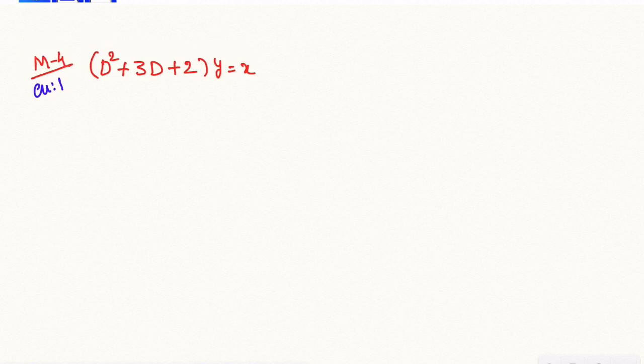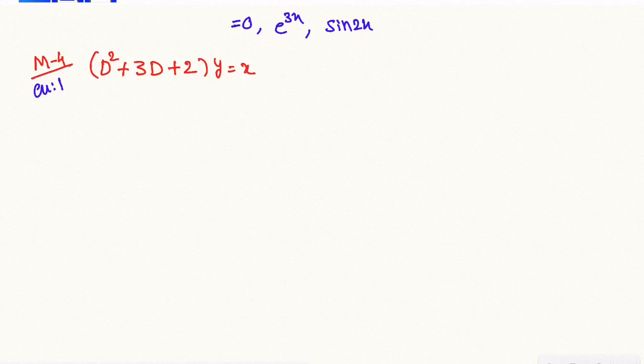We will show the first model with e^(2x) and e^(3x). We will show the third model of sin 2x, sin 3x, cos 3x, cos 2x. The last model is equal to x, x squared, or x cubed.